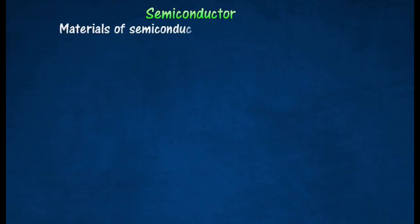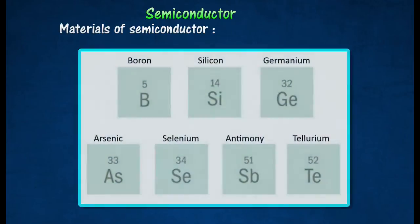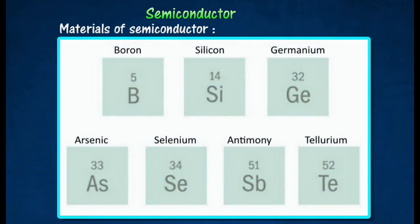Examples of semiconductor materials which are commonly used in the electronic industry are germanium, silicon, boron, tellurium, arsenic, antimony and selenium. Germanium and silicon are commonly used semiconductor materials in the electronic industry.